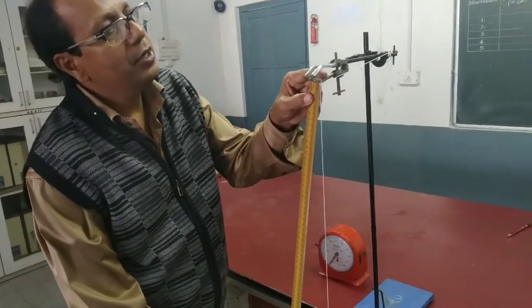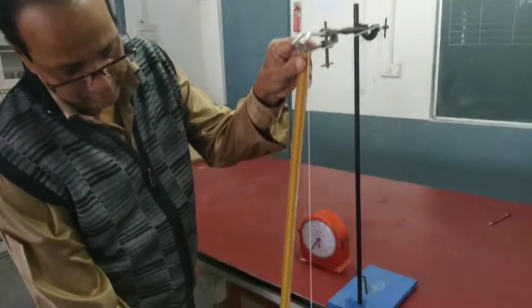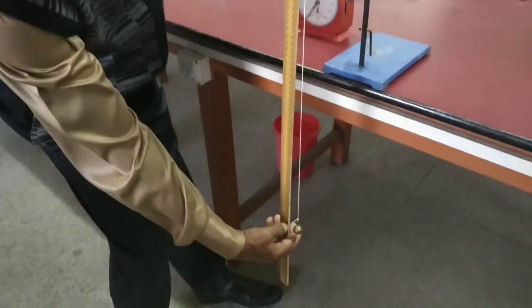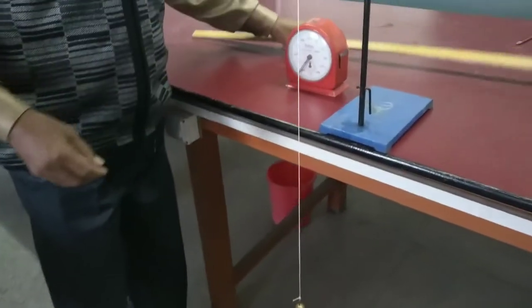For second observation we will take the effective length 80 cm. Now we will do the same.